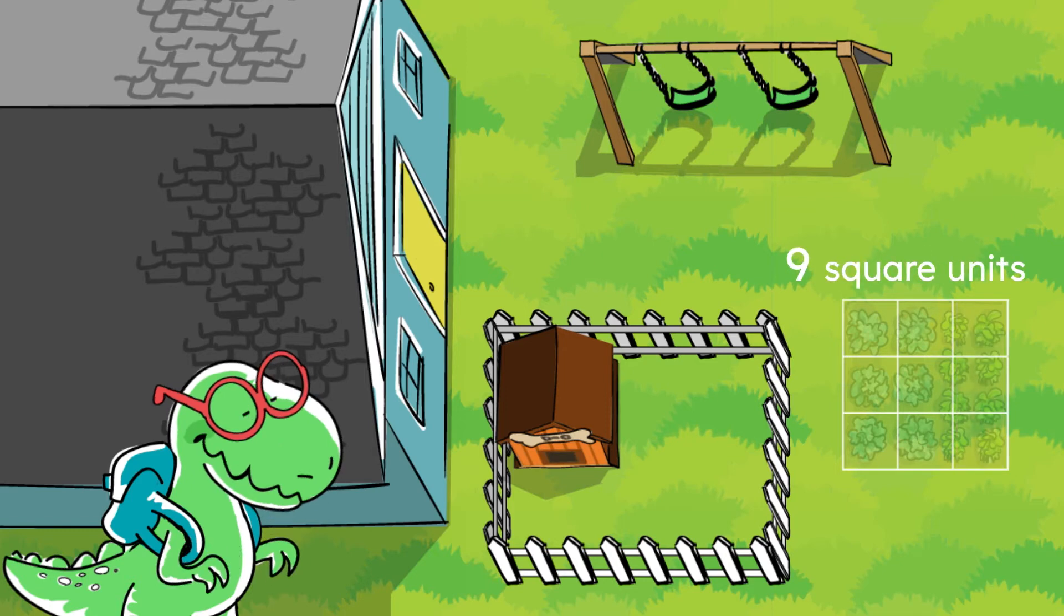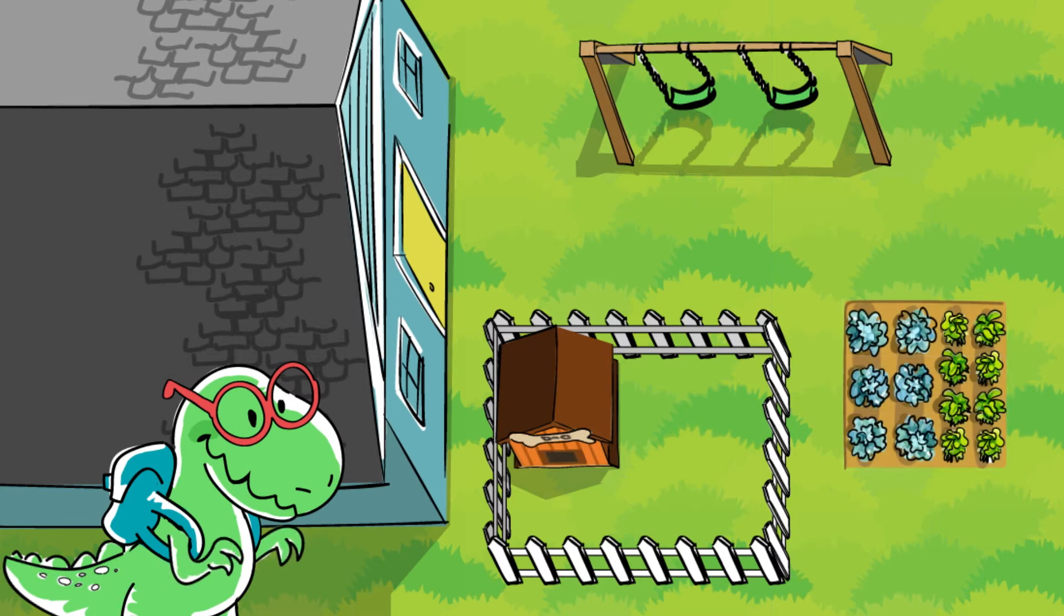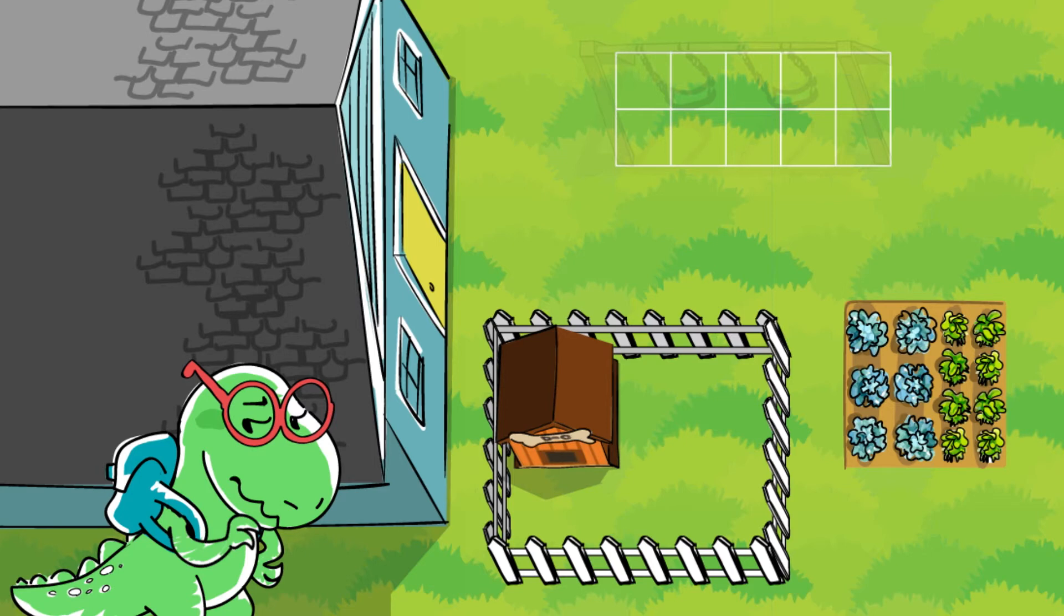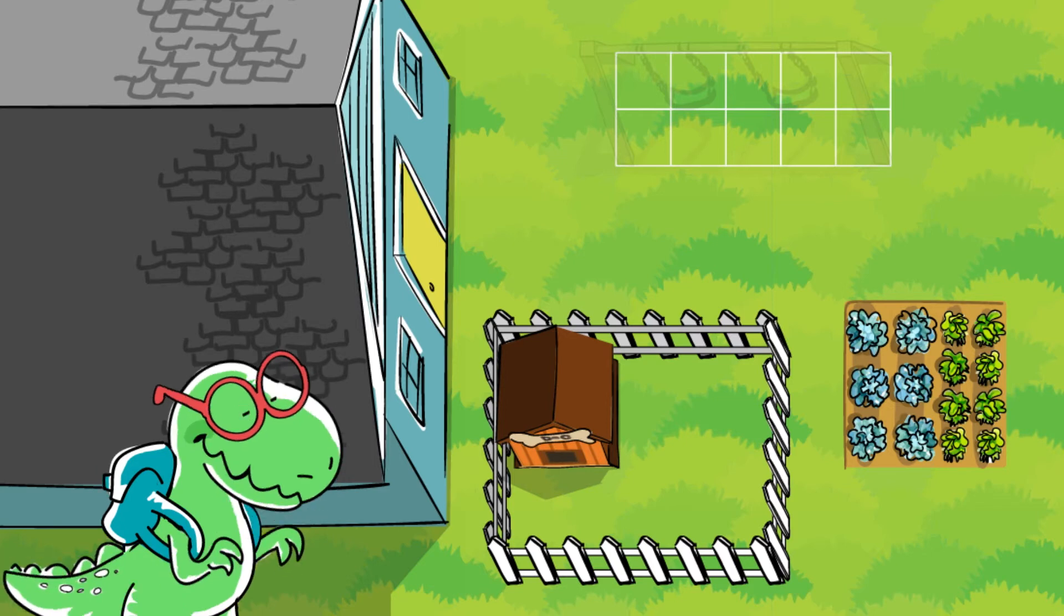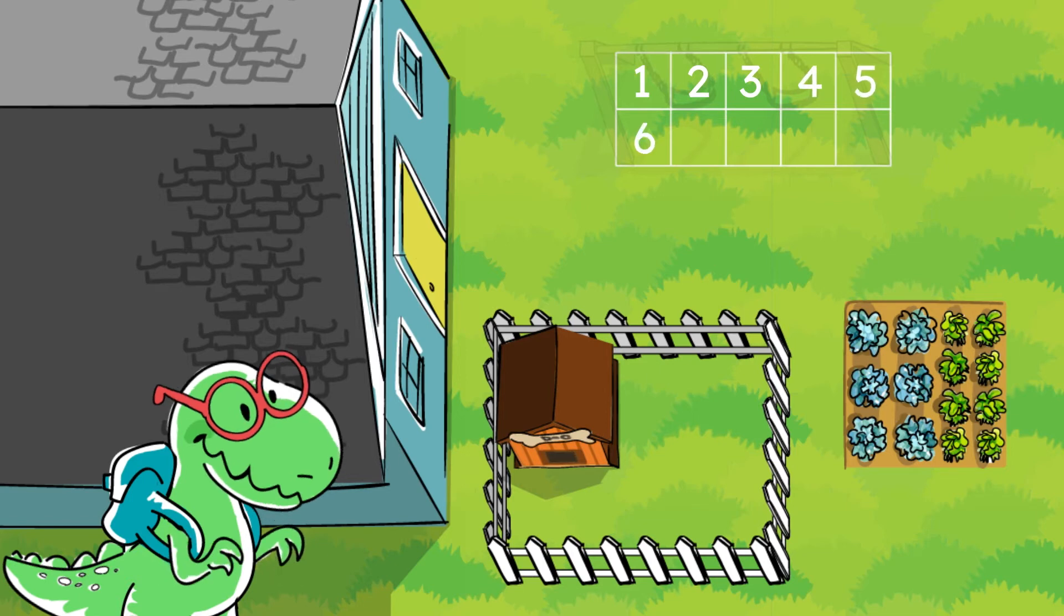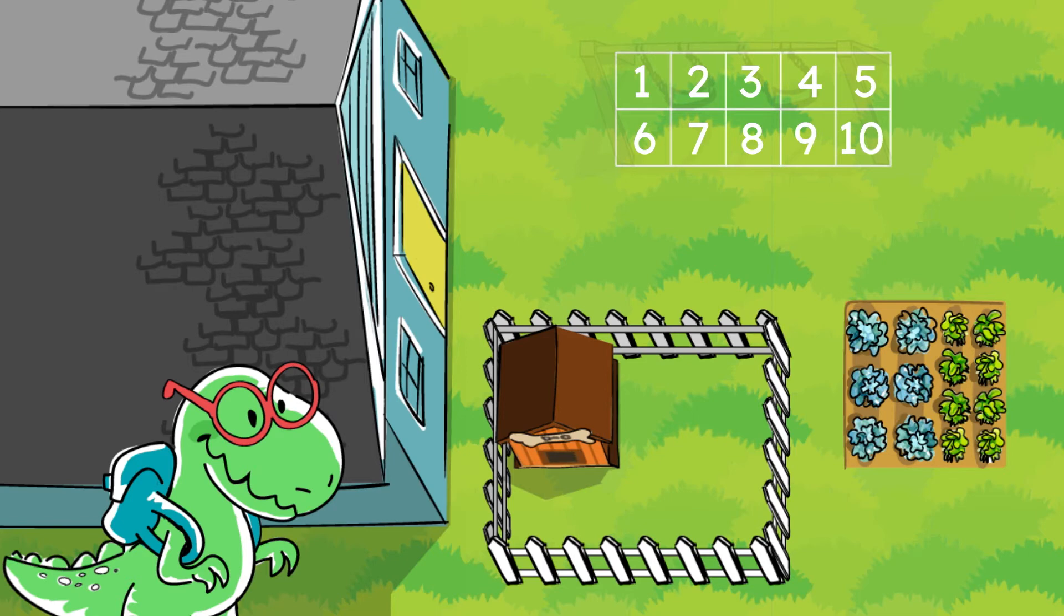Can you help me measure one more area in my yard? Awesome! What is the area of my swing set and how can we figure it out? That's right. We can count the squares. 1, 2, 3, 4, 5, 6, 7, 8, 9, 10. The swing set is 10 square units.